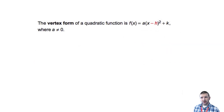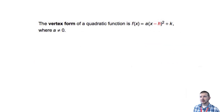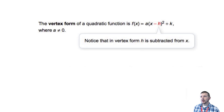The vertex form of a quadratic function is f of x equals a times the quantity x minus h squared plus k, again where a is not equal to zero. Notice that in vertex form, h is subtracted from x, so we have subtraction built into vertex form, and that's going to be important in certain cases.